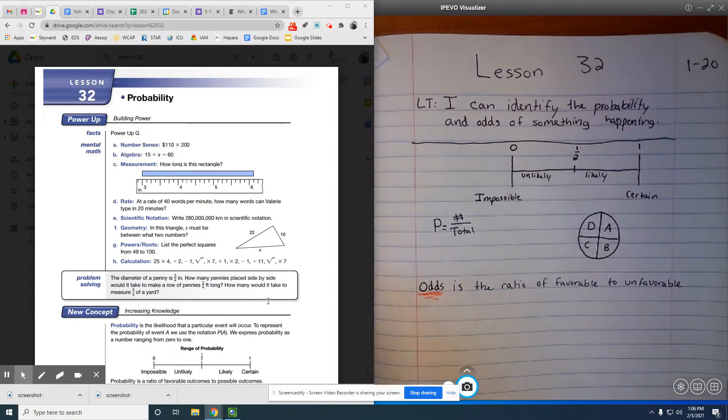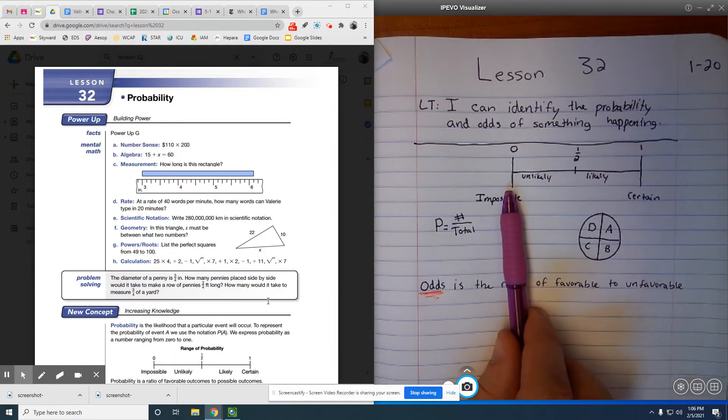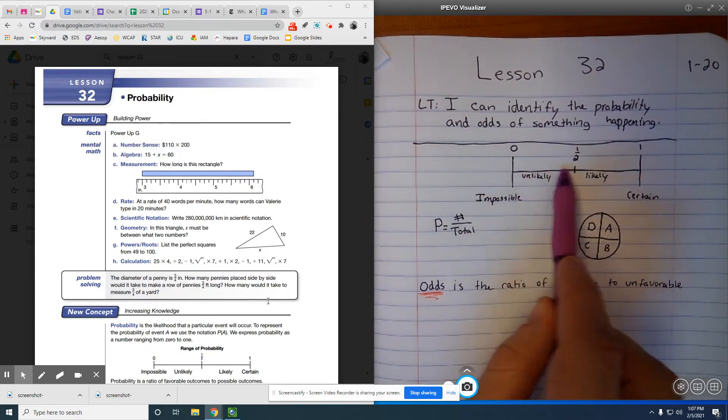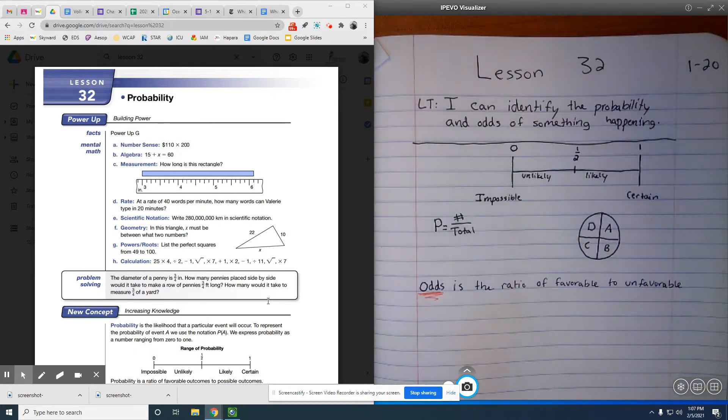So go ahead and get this little graph written down. We write probability as 0 to 1, where 0 being impossible and 1 being that it's going to happen. Anything between 0 and 1 half is unlikely. Anything over 1 half, it's pretty likely that that is going to happen.